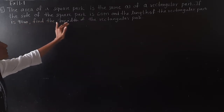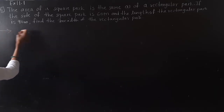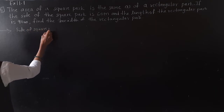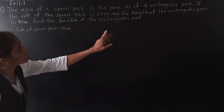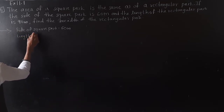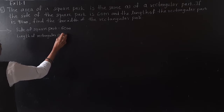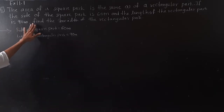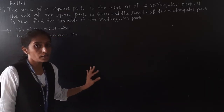If the side of the square park is 60 meter, that is given. Side of square park is given as 60 meter. And the length of the rectangular park is given as 90 meter. We are asked to find the breadth of the rectangular park.